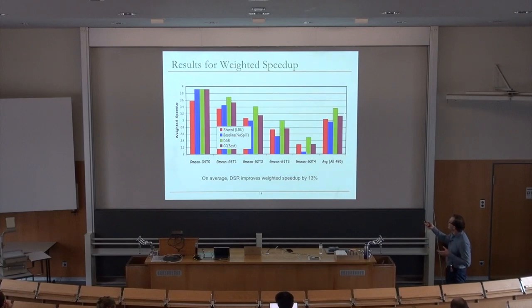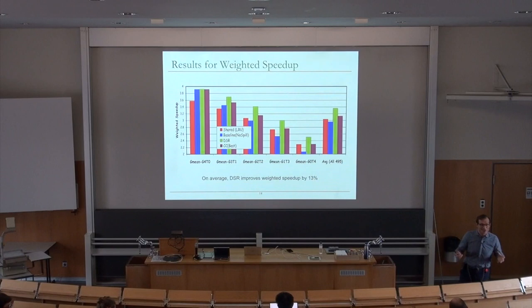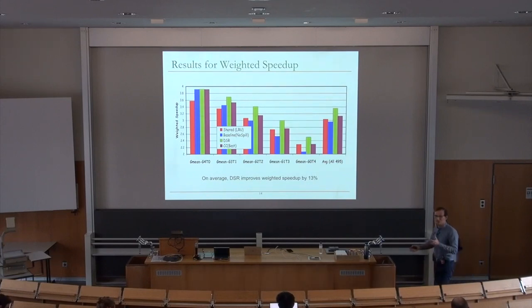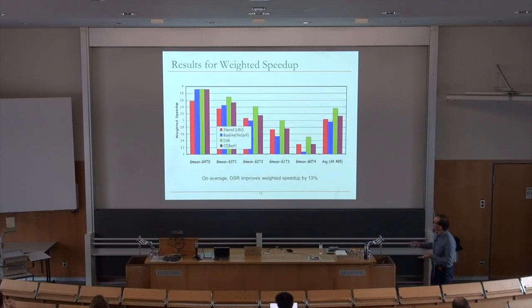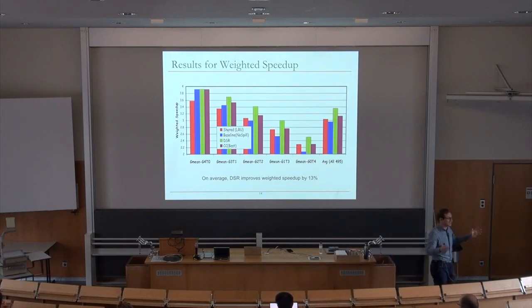Comparing policies: 'shared' means LRU-based sharing with no partitioning; 'baseline' is private caches with no spilling. Across 495 workloads, private and shared are very similar. Dynamic spill-receive provides higher performance in nearly all categories, except when all applications are givers — then there's no benefit since no spilling is needed. When all are takers, performance improves significantly because the system dynamically adapts to access patterns even when applications individually use a lot of cache.